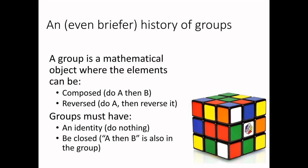I'm going to be talking about a mathematical object called a group. These come up in all kinds of fields, whenever you have some kind of operation where you can combine operations. Imagining a Rubik's cube: you can do one move and then another, you can reverse it, and there must be the concept of not doing anything. Whenever you have these things, you have what mathematicians call a group.